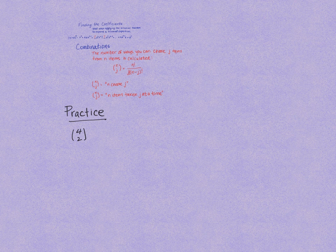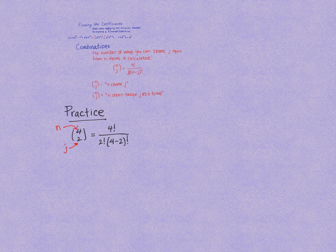So our 2 here is the j and our 4 is the n, and we'll plug it into our formula. In the numerator we have 4 factorial, n factorial, divided by j factorial and then (n minus j) factorial.